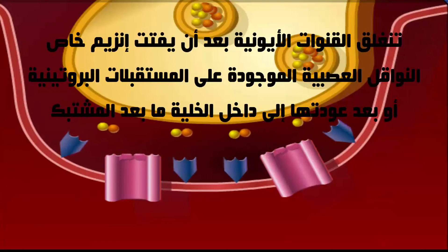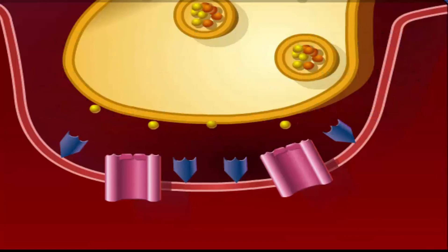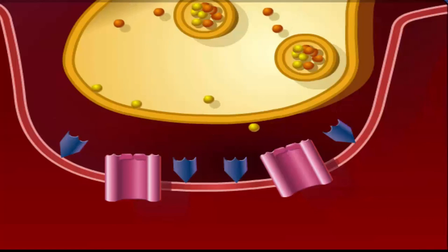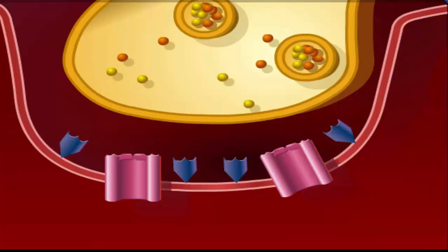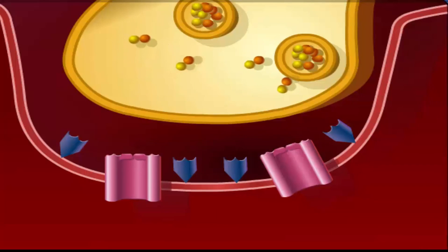Acetylcholine is rapidly broken down to acetic acid and choline in the synaptic cleft by the enzyme acetylcholinesterase. The choline is reabsorbed by the presynaptic terminal and combined with acetic acid to form more acetylcholine, which enters the synaptic vesicles.